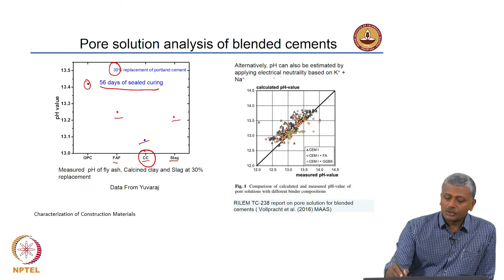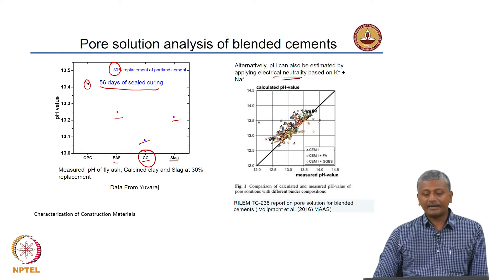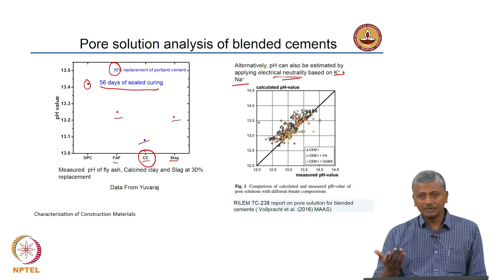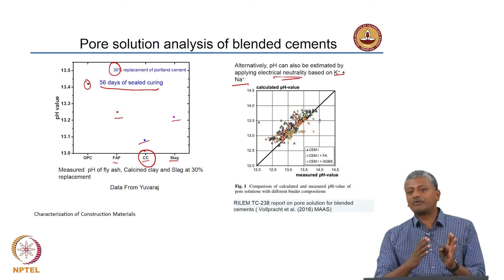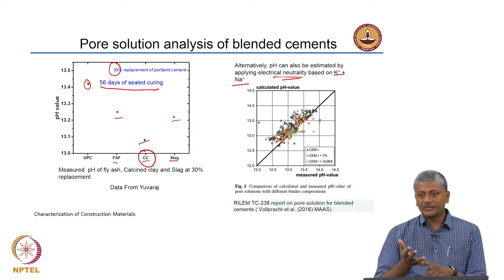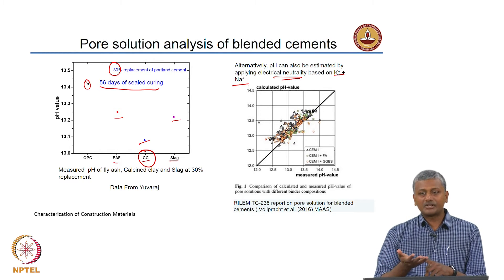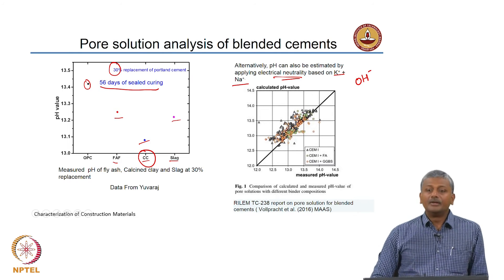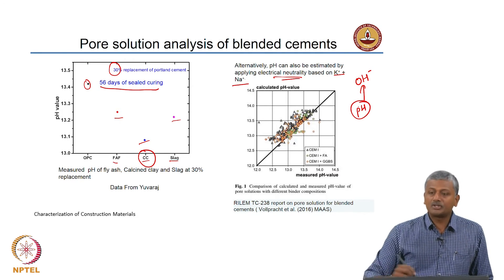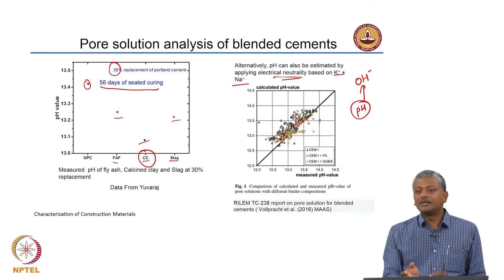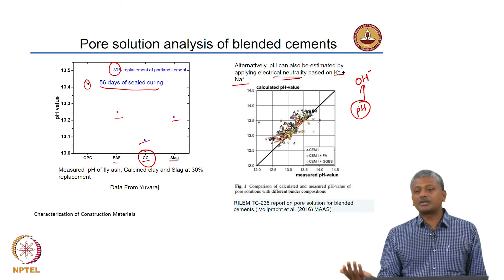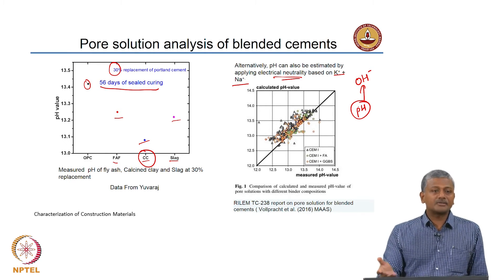Instead of directly measuring pH, you can also estimate the pH by applying electrical neutrality based on the composition of sodium and potassium present in your system. In your pore solution, after a sufficient degree of hydration has taken place, the only species available in appreciable amounts are sodium and potassium — the positively charged species — and for balancing you need a negatively charged species, in this case OH⁻. When you apply an electrical balance to sodium and potassium using OH⁻, you can determine the pH of your system, since pH equals the negative log of the hydrogen ion concentration, or equivalently the log of OH⁻ ion concentration. The higher the OH⁻, the higher will be the pH.